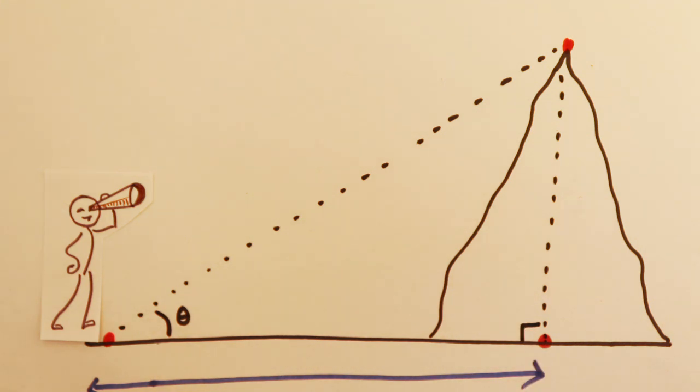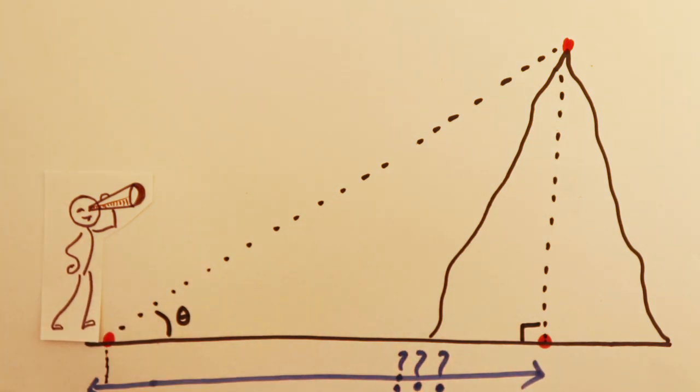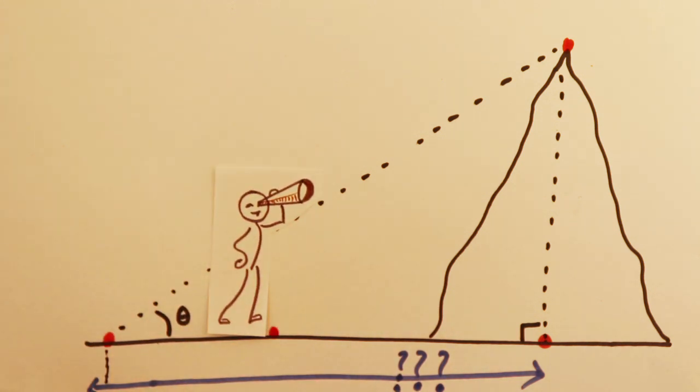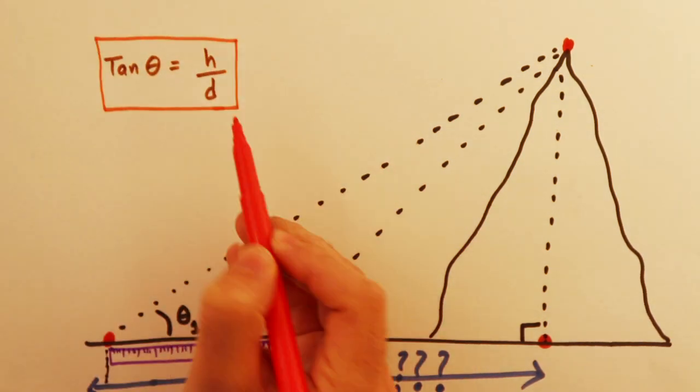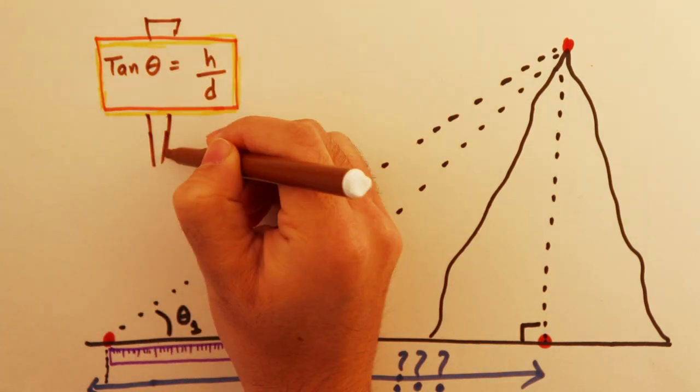But wait, what if you cannot measure this big distance? In that case, walk towards the mountain and measure the second angle from this new position. In this way, you have two angles measured from two positions in the ground. On top of that, you also know the distance between your initial and final position in the ground. Now, you can put those values back into your trigonometric mantra and play with the equations a bit, which will give you back the height of the mountain.